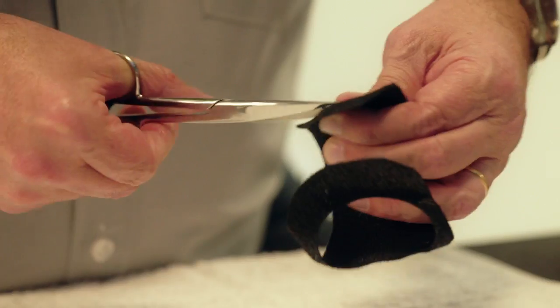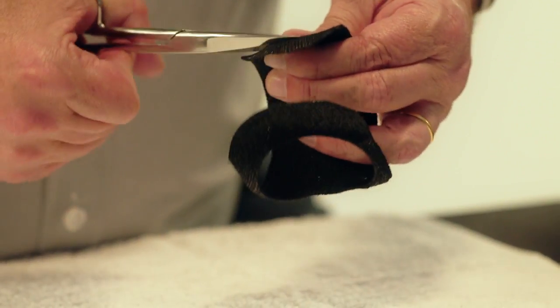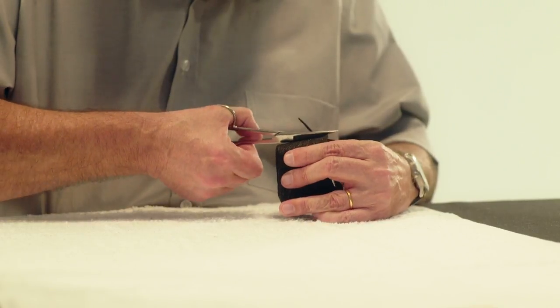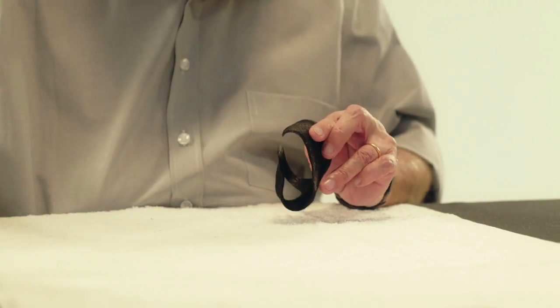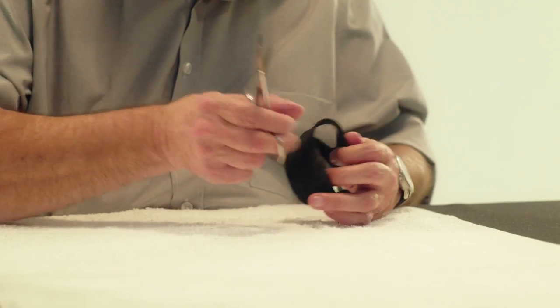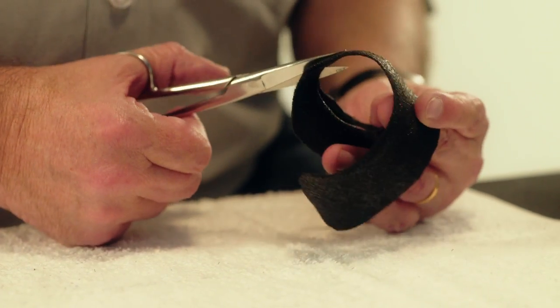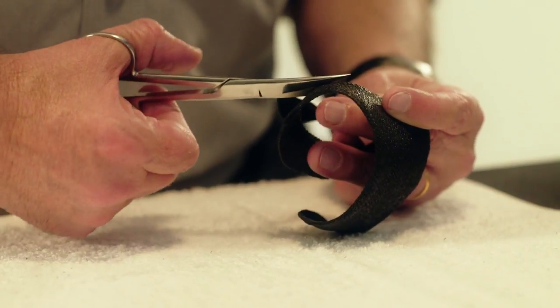Cut a slit opening on the palmar side of the orthosis which will allow a Velcro strap to pass through. Enlarge the hole for the thumb liberating as much of the thenar eminence as possible.